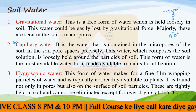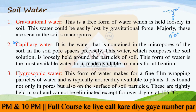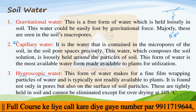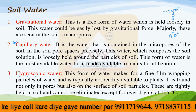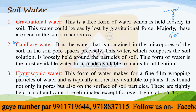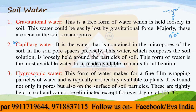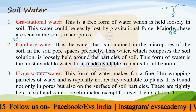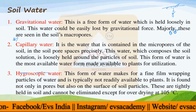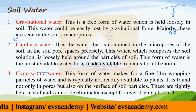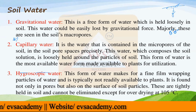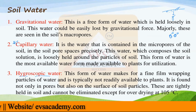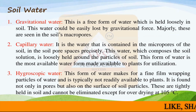So we have three types of soil water: gravitational water, capillary water, and hygroscopic water. Gravitational water easily goes away with the help of gravity. Capillary water is used by plants and is generally held in the micropores of the soil. Hygroscopic water is very tightly held by the soil particles and cannot be utilized by plants. These are all three types of soil water.